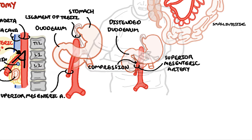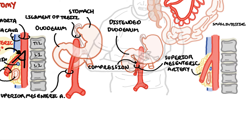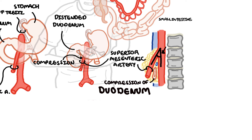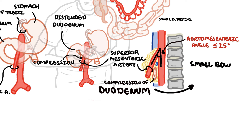In superior mesenteric artery syndrome, compression of the duodenum occurs by the superior mesenteric artery against the aorta or vertebra. The aorta-mesenteric angle is less than 25 degrees and the aorta-mesenteric distance is typically less than 8 mm. The most common association is significant weight loss leading to loss of the mesenteric fat pad — the yellow stuff here — reducing the aorta-mesenteric angle and compressing the third part of the duodenum, causing a small bowel obstruction.